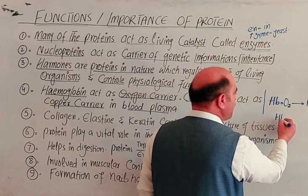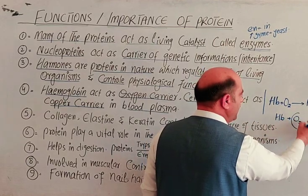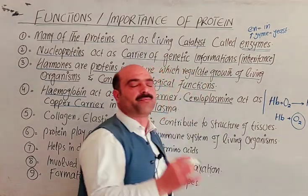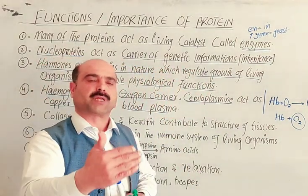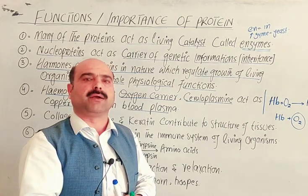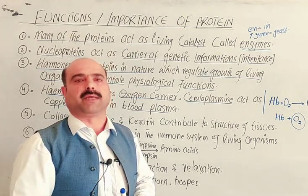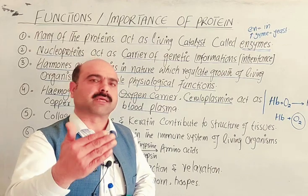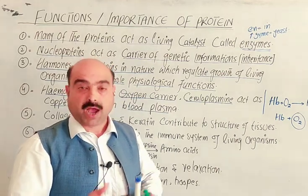When oxygen is delivered to the cell, the hemoglobin protein releases the oxygen. The oxygen provided allows food to be oxidized, breaking it down and releasing carbon dioxide, water, and a large amount of energy.